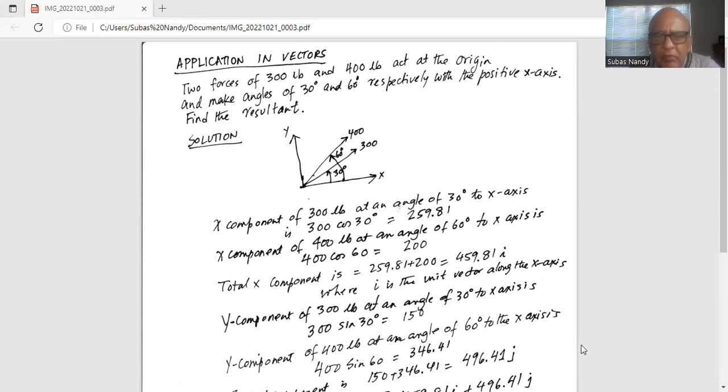The x component of 300 pounds acting at an angle of 30 degrees to the x-axis is 300 cosine 30, which is 259.81. The x component of the 400 pound force acting at an angle of 60 degrees to the x-axis is 400 cosine 60, which is 200. Total x component is 259.81 plus 200, which is 459.81i, where i is the unit vector in the x direction.